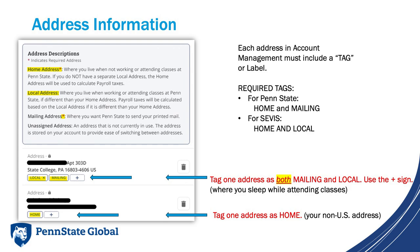Each address that you add to the account management system requires a label or a tag. Penn State and SEVIS require a home address — your non-Penn State address. The F-1 and J-1 visas are non-immigrant visas, therefore your home address must be a non-U.S. address. Penn State also requires a mailing address and SEVIS requires a local address. Tag your non-Penn State, non-U.S. address as your home address. Tag your Penn State address as mailing, which is required, and then also tag the mailing address as a local address. The end result will be having two addresses entered, including three tags. Other address information, such as university office addresses, are permitted but are not required and are not reviewed in this video.